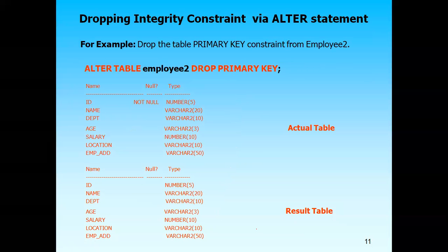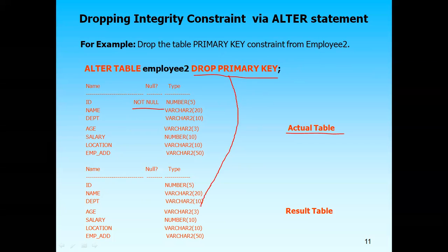Like the add option, there is also a drop option. If in the future you want to drop a constraint — either primary key constraint or foreign key constraint — you can do it with the help of ALTER TABLE. The syntax is: 'alter table table_name drop primary key'. Since there is only one primary key per table, no need to mention the field name. It will remove the primary key from the table. Before the ALTER statement, ID is the primary key, and after executing the statement, the not null property is removed from ID.